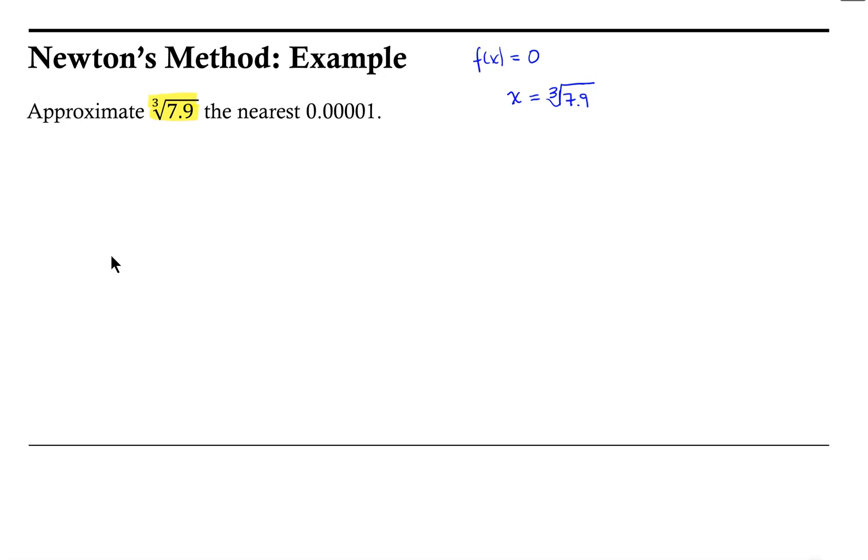So if x is equal to the cube root of 7.9, I could imagine cubing both sides of this equation. If I did that, then I would have the equation x cubed equals 7.9. Now recall that I want to have a function equal to 0, so if I subtract 7.9 from both sides of the equation, I would have x cubed minus 7.9 equals 0.